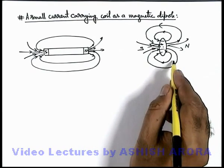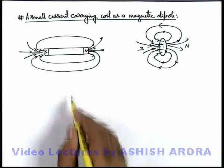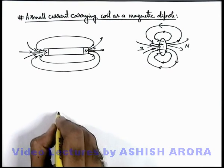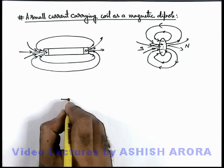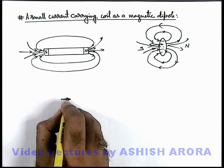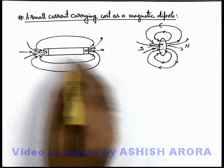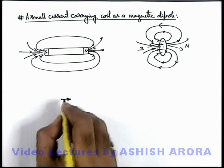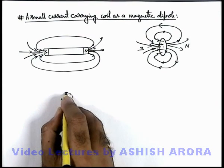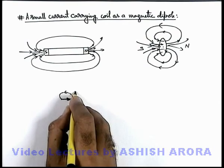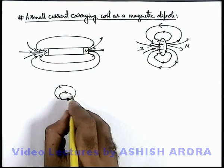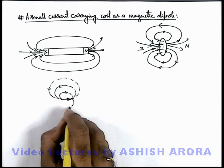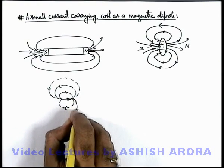Now if we consider the similar situation in case of a very small sized bar magnet, or which we can treat as a small magnetic dipole in which the dipole moment exists from south to north, which can be represented by an arrow — in this situation also from the north pole magnetic lines originate and these enter into the south pole of this magnetic dipole, and the configuration would be like this.